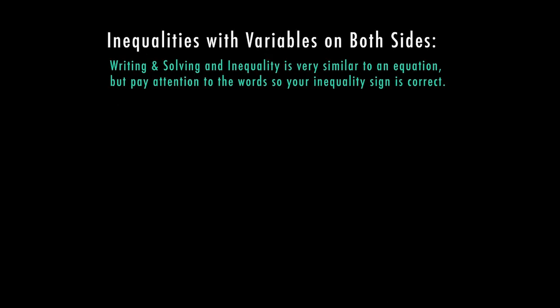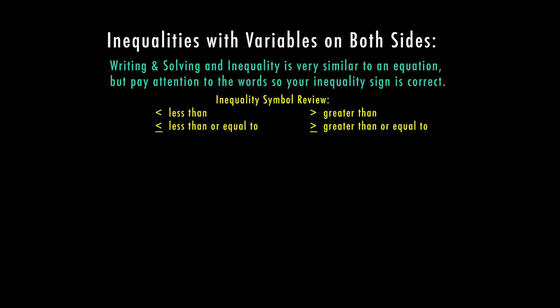When I have inequalities with variables on both sides, I'm going to have to write and solve the inequality very similar to an equation. But I want to pay attention to the words so that my inequality sign is the correct one. Just a reminder, your inequality symbols are going to be less than, less than or equal to, greater than, and greater than or equal to.